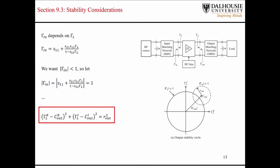Let's look at how we can use these expressions to help us understand the stability of these amplifiers we're going to be designing. On this input side, it's pretty clear that if the input reflection coefficient is greater than zero, that means that the return voltage wave is going to be increasing in magnitude. This is a positive feedback mechanism which can potentially lead to instability.